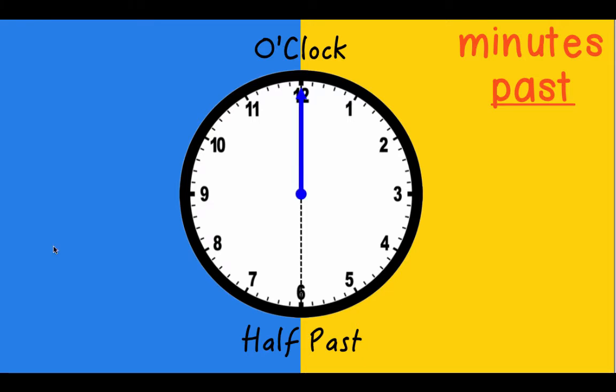We're going to focus on the movement of the minute hand just around the four main points of the clock. So we've already covered o'clock and half past. Now we're going to have a look at what happens when the minute hand moves in a clockwise direction around to the 3. Now we can think of this as moving around a quarter of the clock.